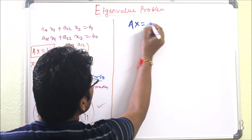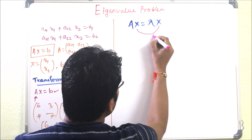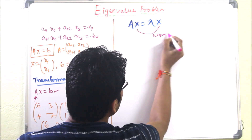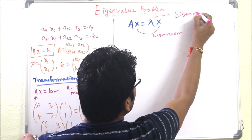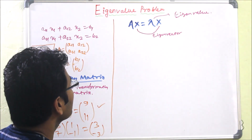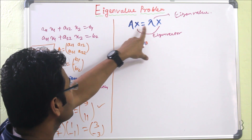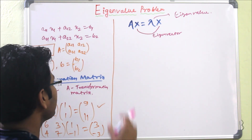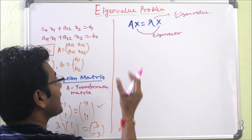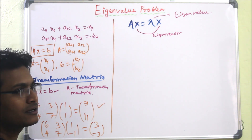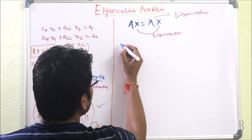That observation gives us the idea of the Eigenvalue problem, which is defined as Ax = λx. Here x is called the eigenvector and λ is called the eigenvalue. The aim is to find such x that this relation holds, and that is called the eigenvalue problem.